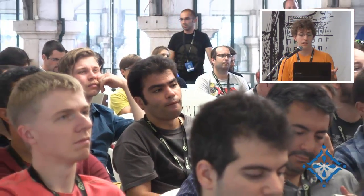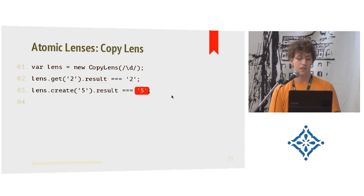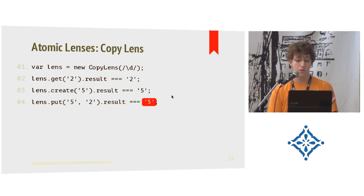Now for the create, you do the same. The input thing, so the updated value now is a 5, and the output is a 5. For the put, as I said, you take the updated value which is the 5 and the original string which is the 2, and you get the updated value back. So in case of the copy lens, the create and the put do the same thing.